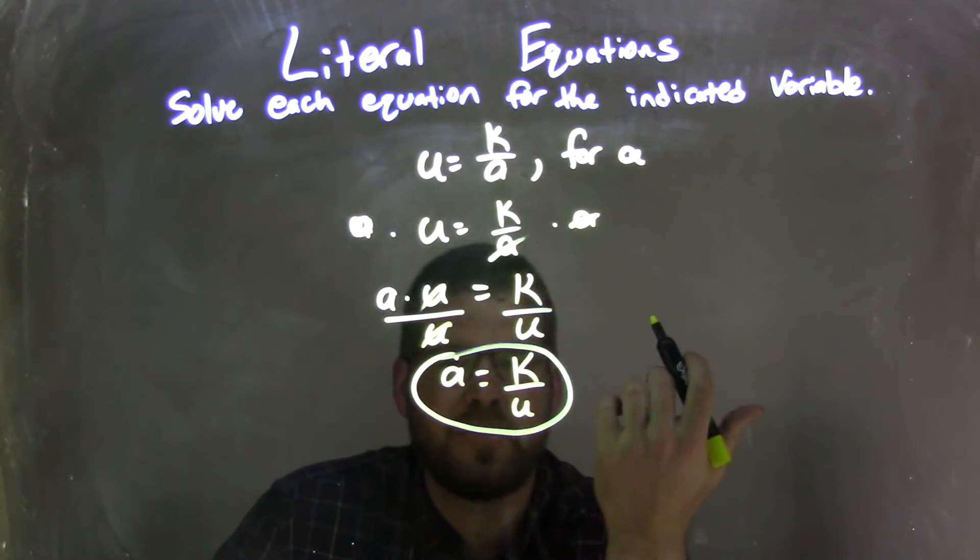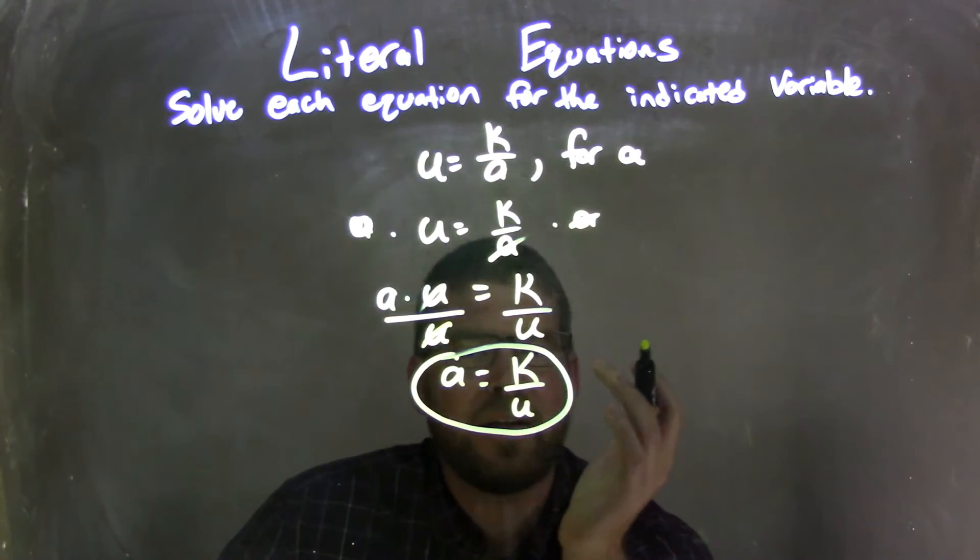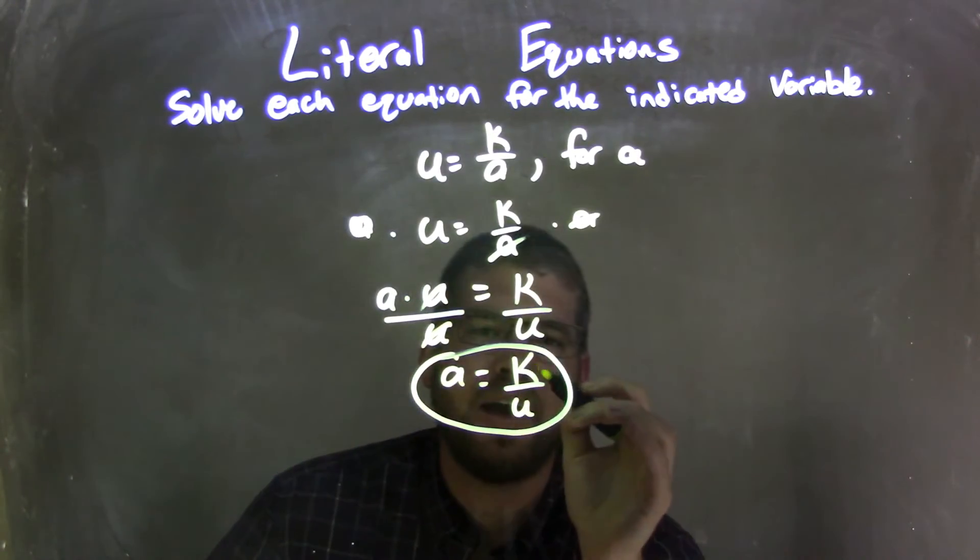And a was first, so it's fantastic. It made it nice and neat already. And so my final answer here is a equals k over u.